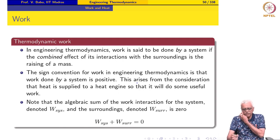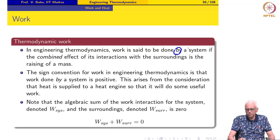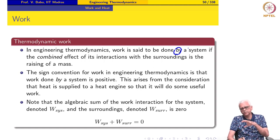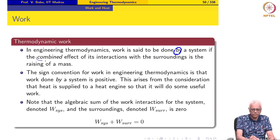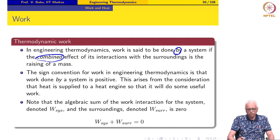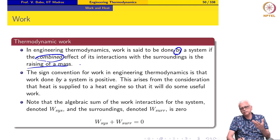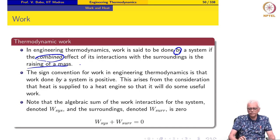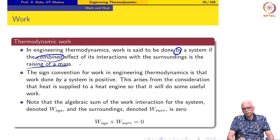In engineering thermodynamics, work is said to be done by a system — and notice that this is very important — work is said to be done by a system if the combined effect of its interaction with the surroundings is the raising of a mass. Raising a mass in a gravitational field means that work is done to increase the potential energy of that mass.